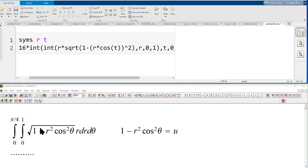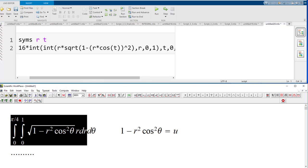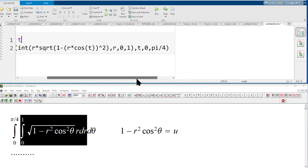We will define symbolic variables r and t. Then for the inner integral I have entered this part in a symbolic manner. Then we do the outer integral with t from 0 to pi over 4, and we will take 16 times this value.